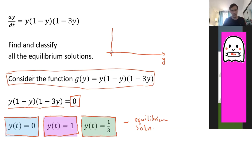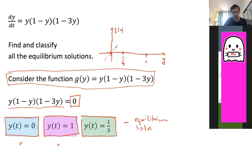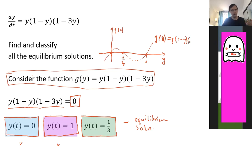One root is at zero. Another one is at one. And another one is at 1/3, so 1/3 would be just about this point. Let's sketch the graph of this function g — this is the y-axis and this is the g(y) axis. The function has three roots: here, at 1/3, and at one. So the function will look like this. That's the function g(y) equals y times (1 minus y) times (1 minus 3y).